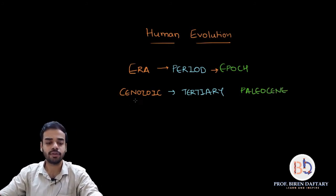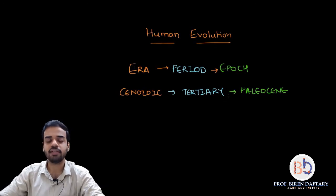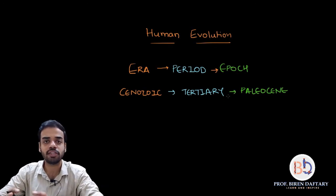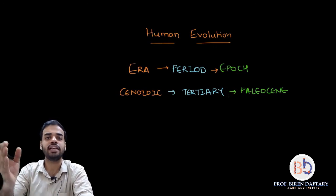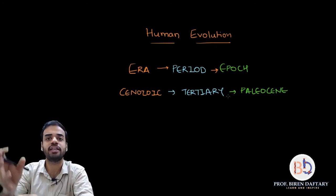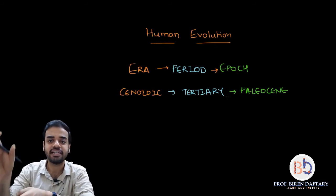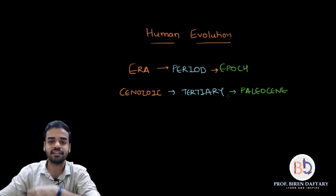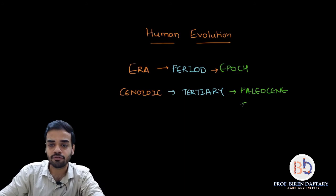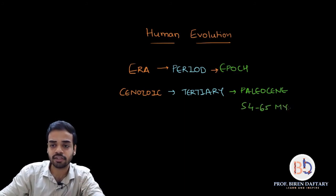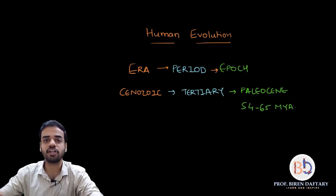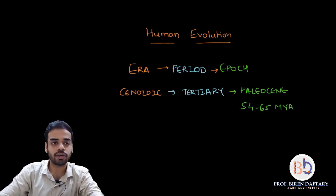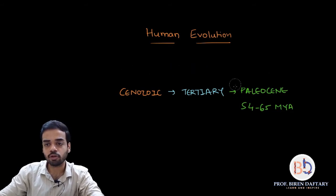Human evolution, ape evolution, and monkey evolution all started in the Paleocene epoch, approximately 54 to 65 million years ago.